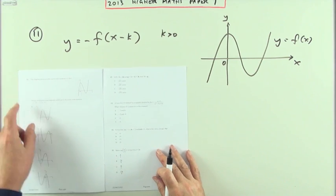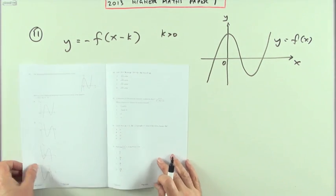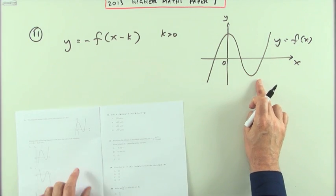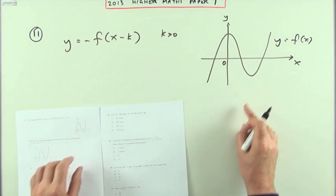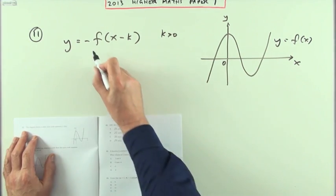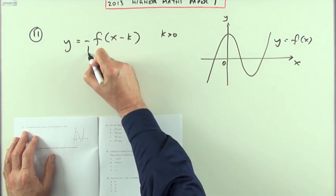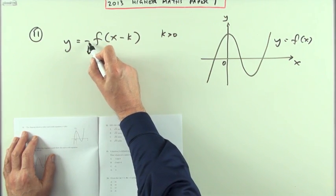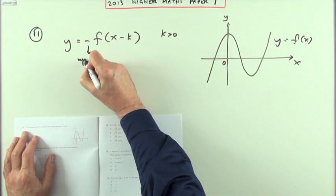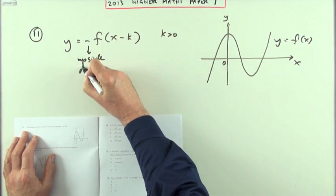Number eleven: a transformation of a graph. If this is the graph of the original function, what would be the graph of this alteration to a transformation? There's two transformations, one outside, one inside. The outside transformation simply says the new y coordinates will be the negative of the old ones, so that means it's going to be upside down.